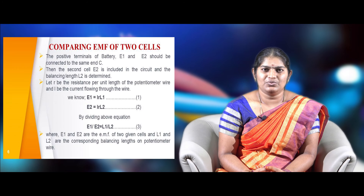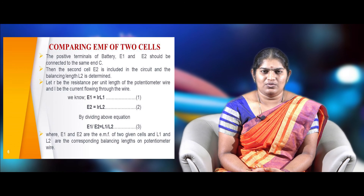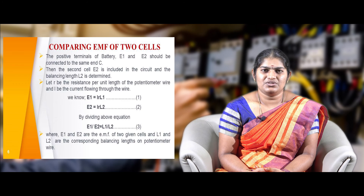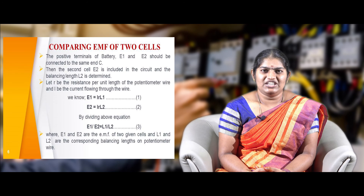Let R be the resistance per unit length of the potentiometer wire and I be the current flowing through it. Then: E1 = I·R·L1 (equation 1) and E2 = I·R·L2 (equation 2). Dividing equation 1 by equation 2, E1/E2 = (I·R·L1)/(I·R·L2). Cancelling I·R from numerator and denominator, we get E1/E2 = L1/L2, where E1 and E2 are the EMFs of the two cells and L1, L2 are the corresponding balancing lengths on the potentiometer wire.